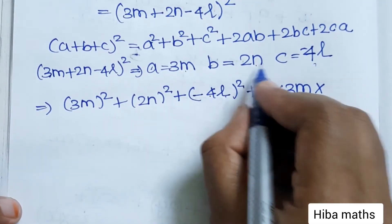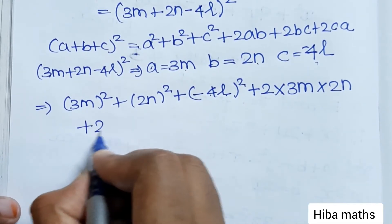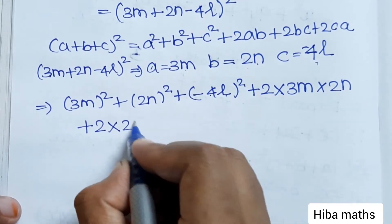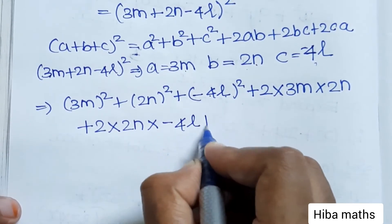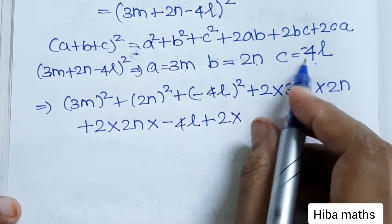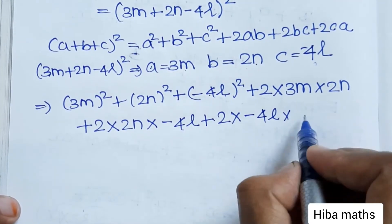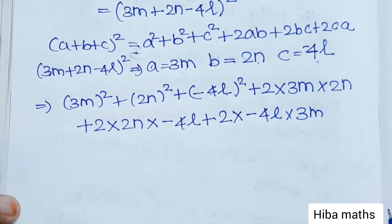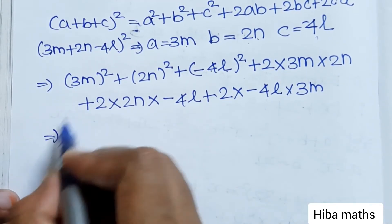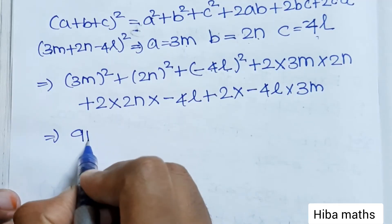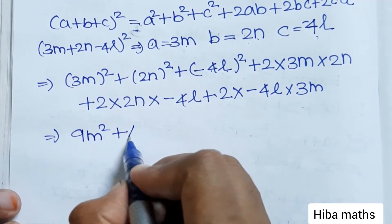...plus 2 into a (3m) into b (2n), plus 2 into b (2n) into c (−4l), plus 2 into c (−4l) into a (3m). Now: (3m)² = 3×3 = 9m², (2n)² = 2×2 = 4n²...